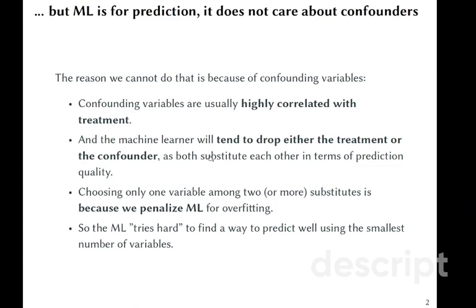The machine learner will tend to drop either the treatment or the confounder in this situation. Both confounder and treatment variables will be seen from the point of view of machine learning as substitutes to each other in terms of prediction quality.